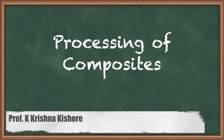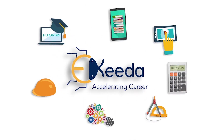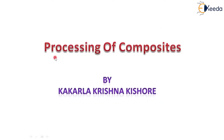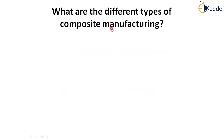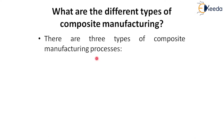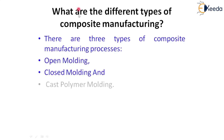Hi everyone. Today in this session we are going to discuss the processing of composites — what is the processing, what are the various processing methods of composites, and how composites are made. There are three different manufacturing processes available in composite manufacturing: open molding process, closed molding process, and cast polymer molding process. Now let me discuss each molding process in detail.